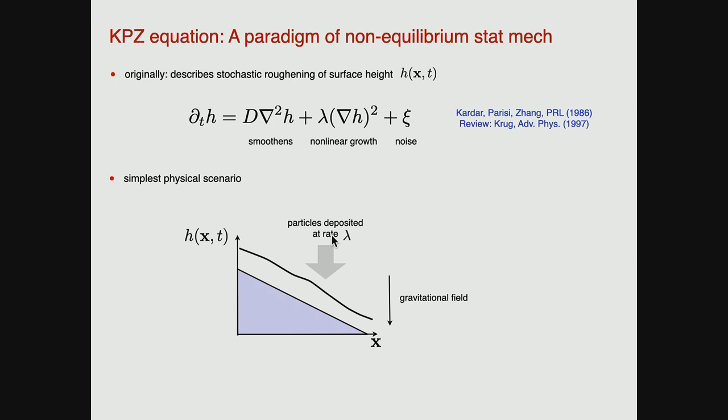We put ourselves into the frame of the growing interface itself, and then the effect of the deposit is really just this non-linear term. From a geometric picture, you need to study a bit the geometry of this problem. Under the assumption that growth goes perpendicular to the tilted surface, geometry tells you that if the interface is tilted, there's a non-linear term. Intuitively, it goes away when you have no drive — when you have an interface that just moves up with no downhill acceleration.